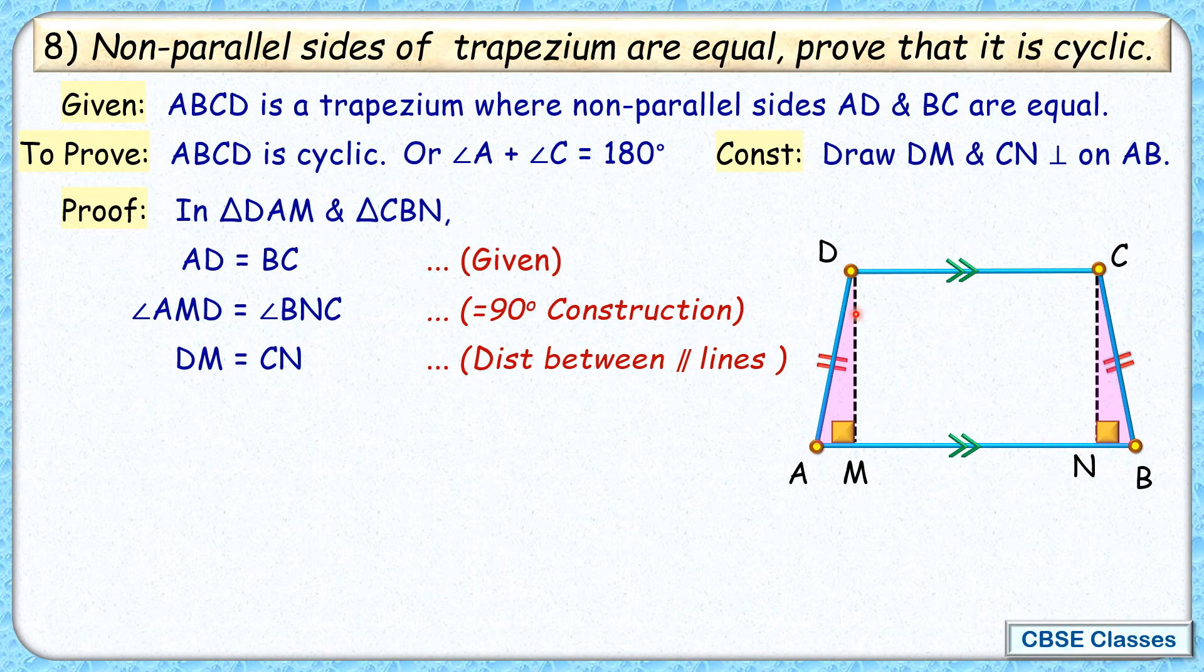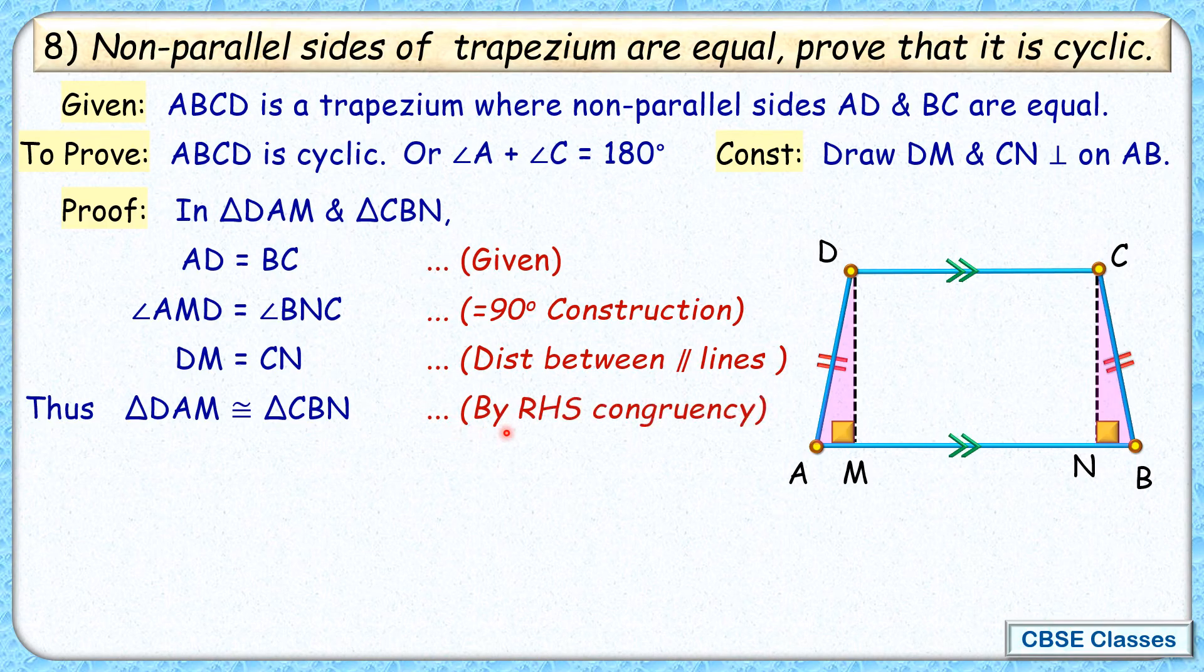And here if you see, we have got hypotenuse AD, right angle at M, and side length DM. These are equal to the other triangle. So we can say that triangle DAM is congruent to triangle CBN by RHS congruency.